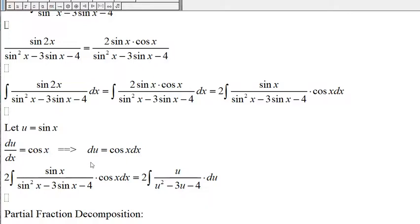So this is u. This will be u squared minus 3u minus 4. Cosine x dx will be du.